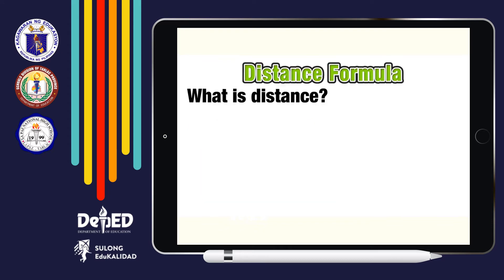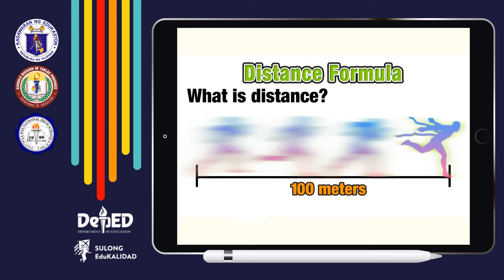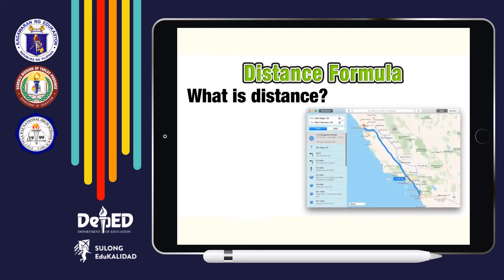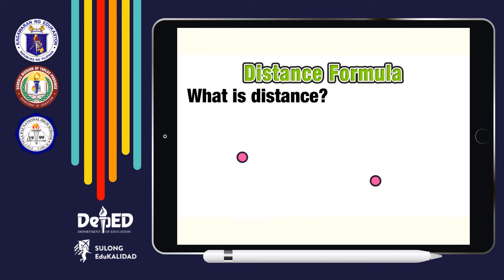For the distance formula, let's ask ourselves first: what is distance? We can think of distance as a length between a starting point and an ending point, just like a starting line and finish line in a 100-meter dash. When we use GPS, we are looking at distances between a starting point and an ending point — just like the drive from San Diego to San Francisco would be a distance of 502 miles. We are going to be concerned about finding the distance between two endpoints connected by a line segment — in this case, line segment CK.